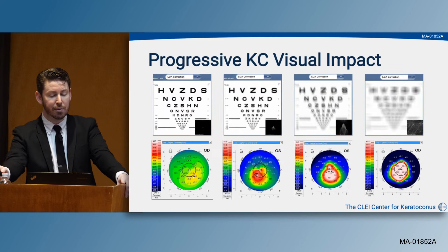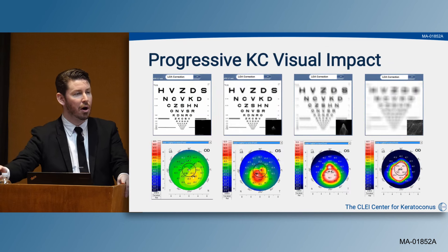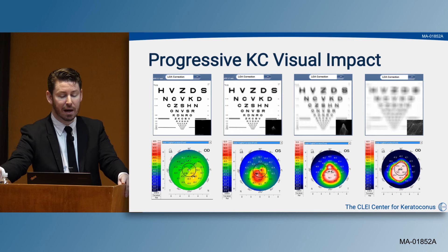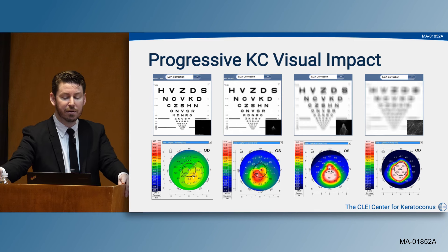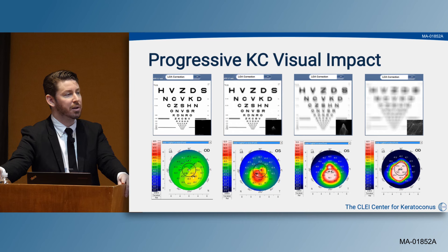We all know the progressive visual impact of keratoconus. The individuals shown here all have their lower-order aberrations corrected. However, you can see the impact is really in the amount of higher-order aberrations, which is distorting the vision. As the disease gets more severe, so do the higher-order aberrations, causing more visual degradation.